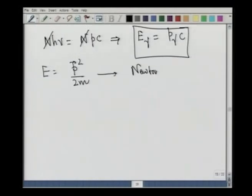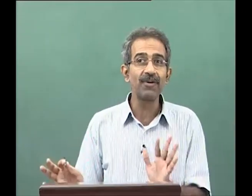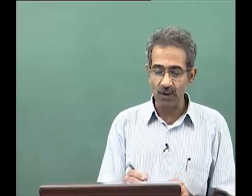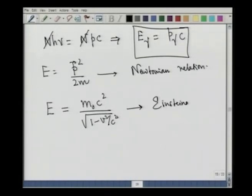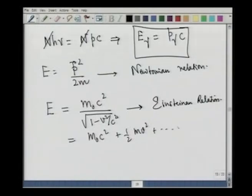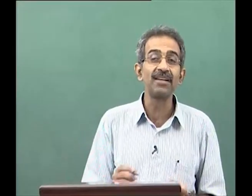When Einstein developed relativity, he gave a refinement. The relativistic energy is m_0 c^2 divided by the square root of 1 minus v^2 over c^2. Making a Taylor expansion in powers of v, we get m_0 c^2 plus one-half m v^2 and so forth — Einstein identified m_0 c^2 as the rest energy. This is the famous mass-energy equivalence showing up as mass defect and production of gamma particles.